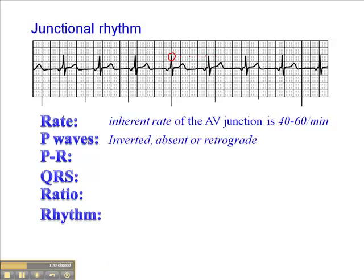The P waves in a junctional rhythm are either inverted — as we see in this case, in lead 2, the P waves are deflected downward — or the P waves may be absent or retrograde. It's important to remember that if P waves are absent, the QRS should be narrower in order to call it a junctional rhythm. The PR interval will be normal, short, or not applicable if we don't see P waves; it is typically short when we see inverted P waves.